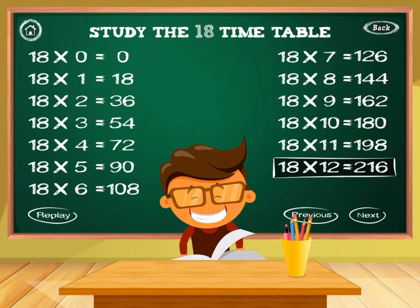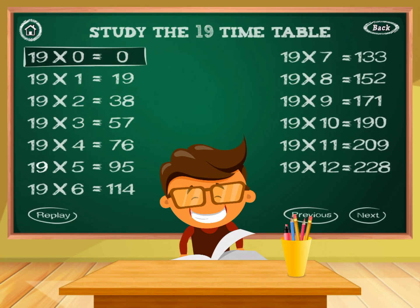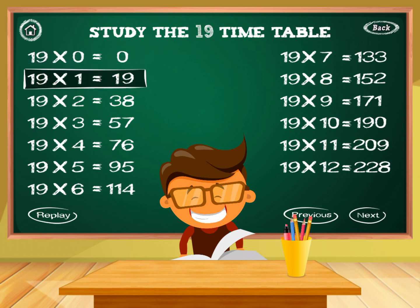Timetable of 19. 19 times 0 equals 0. 19 times 1 equals 19.